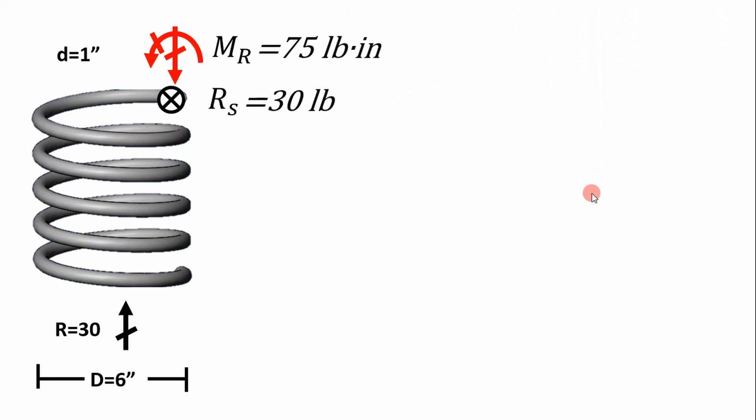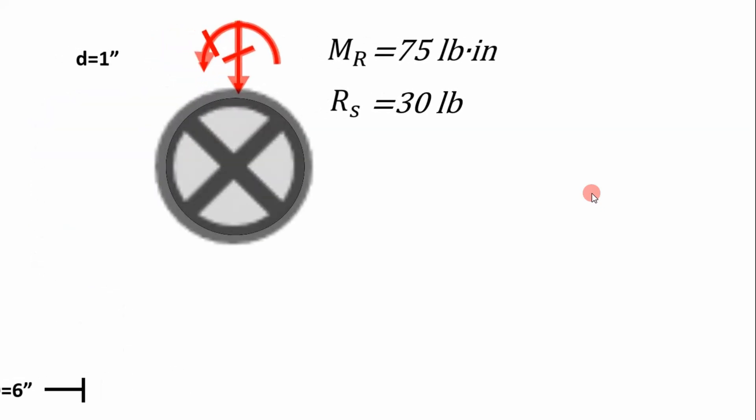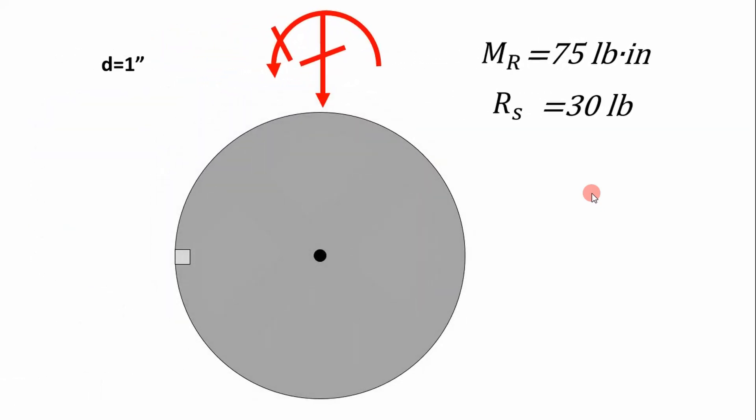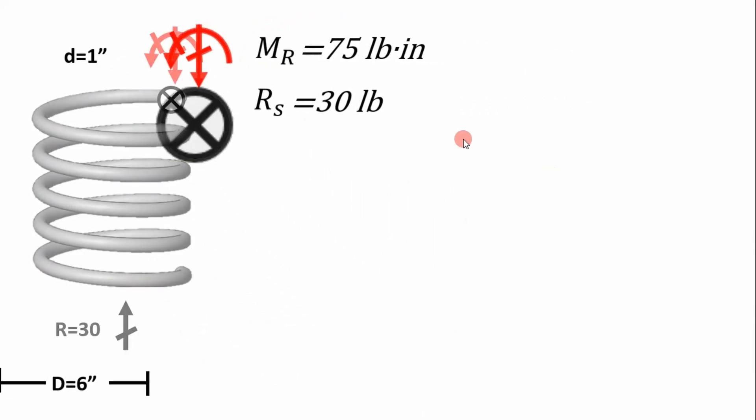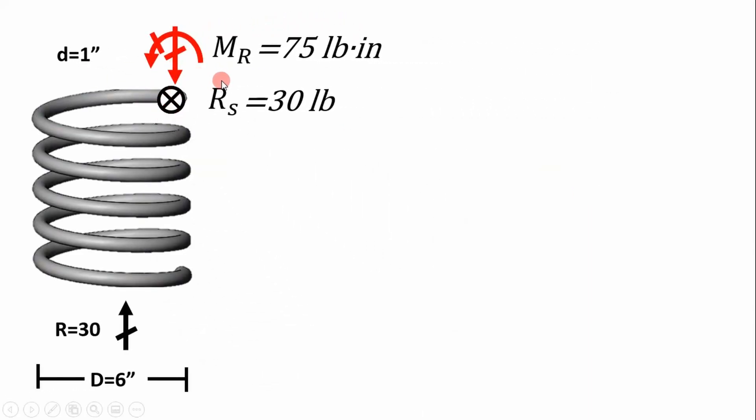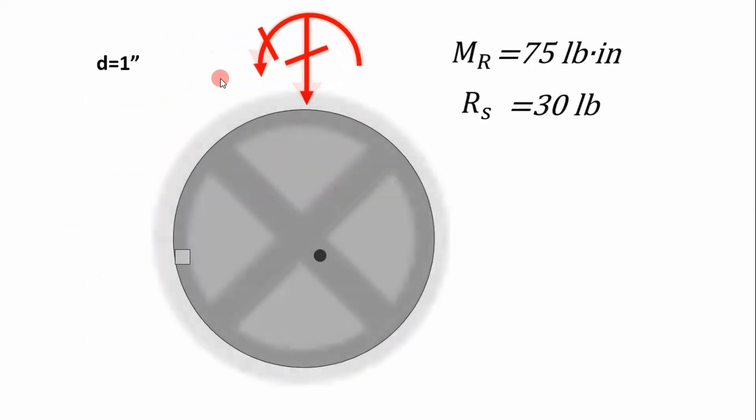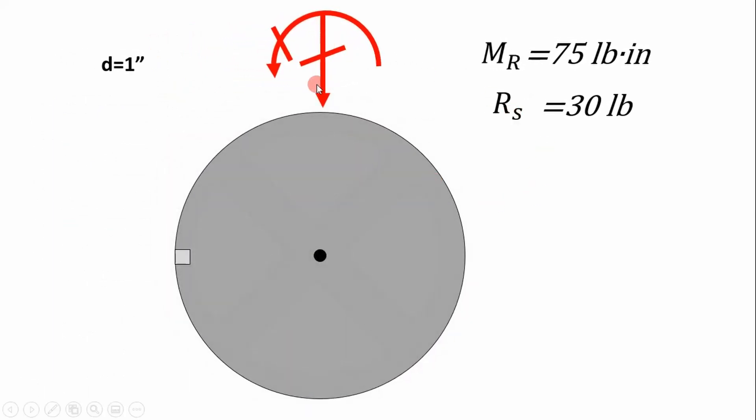The next step you want to do after you've determined your reaction forces is you actually want to zoom in on this thing. And we're zooming in on the coil. If you didn't see that, we're zooming in on this one-inch coil. And if you look at our reaction forces, you can tell if you draw a stress element on the inside, that's going to be where our worst case is.